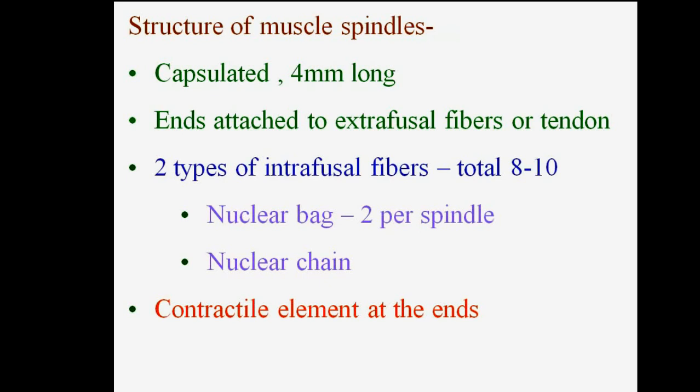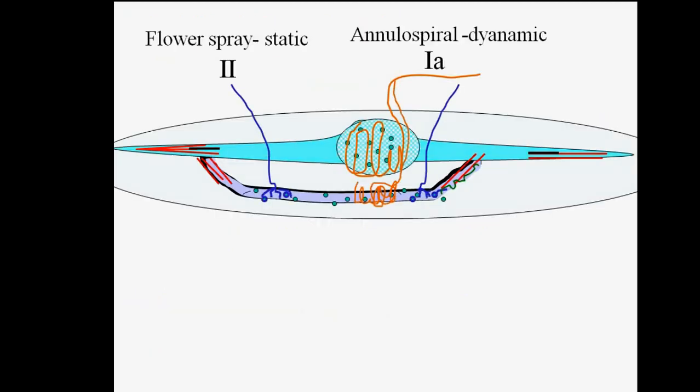Looking at the structure of muscle spindles in detail, these are encapsulated and 4 mm long. Their ends attach to extrafusal fibers or tendon. There are two types of intrafusal fibers, with a total of 8 to 10 intrafusal fibers. There are nuclear bag fibers — 2 per spindle — and nuclear chain fibers. The contractile elements are located at the ends, while the centers are seen as elastic structures.